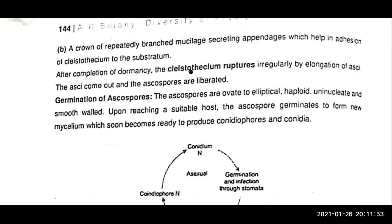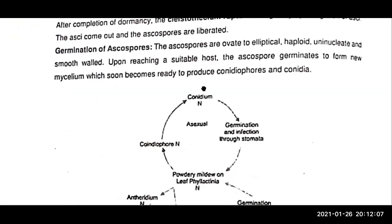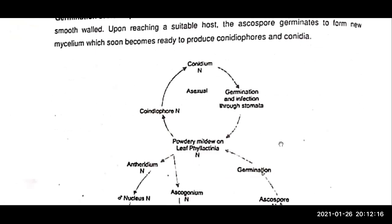After completion of dormancy, the cleistothecium ruptures irregularly by elongation of the asci. The asci come out and the ascospores are liberated. When the ascospores are liberated, they germinate and produce new mycelium of Phylactinia. This is how reproduction takes place and the life cycle is completed.